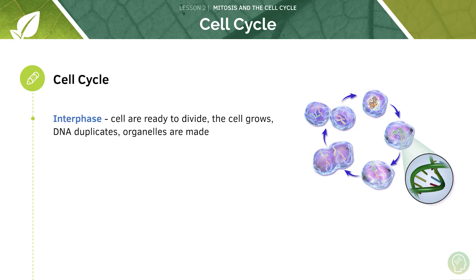Let's look at the first stage of the cell cycle: interphase. I like to think of interphase as the prepping stage for mitosis. In order for the cell to be ready to divide, the cell has to go through interphase in which it grows in size, its DNA duplicates, and new organelles are made.